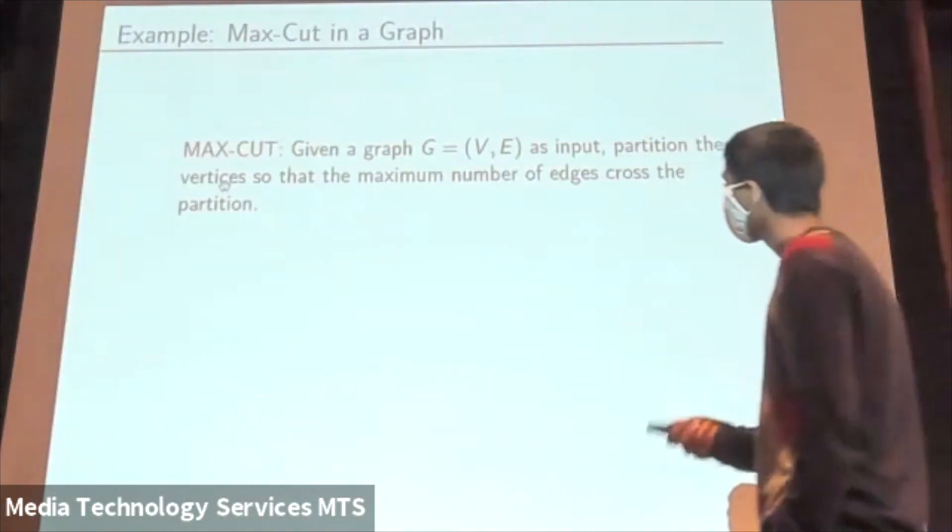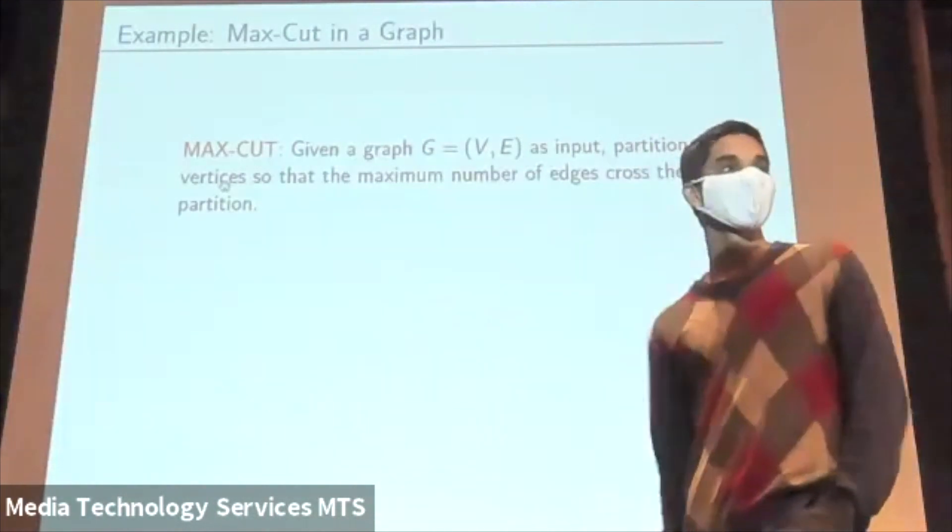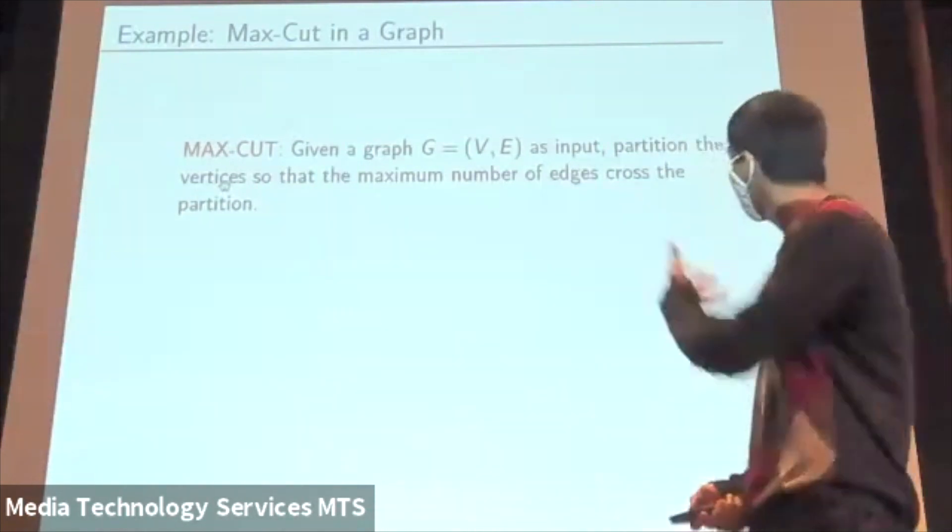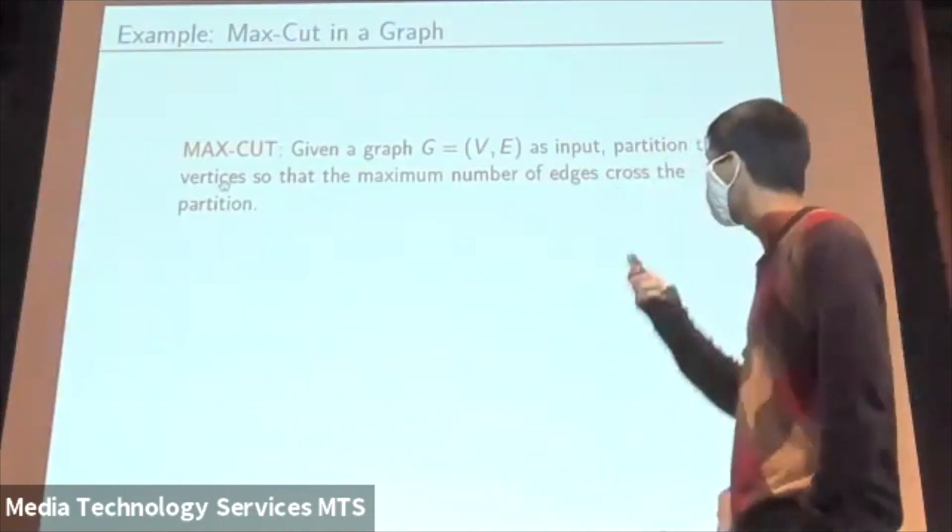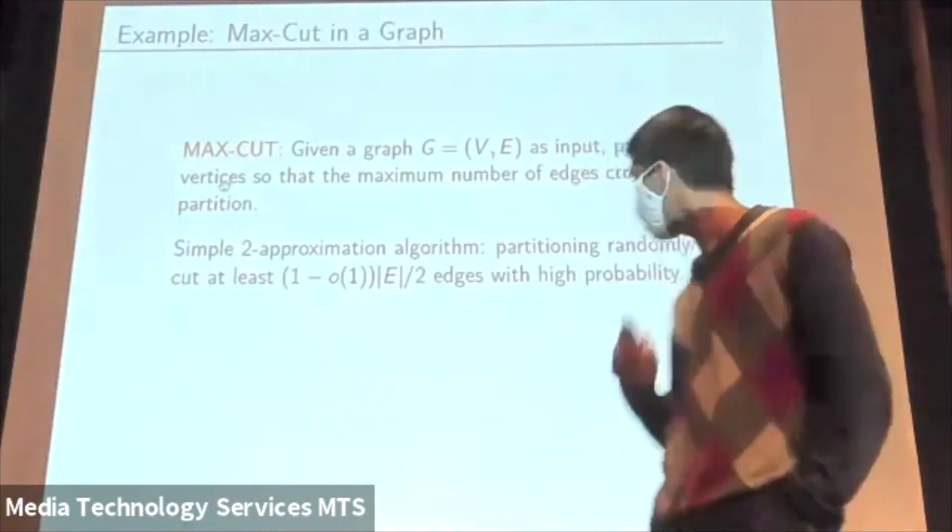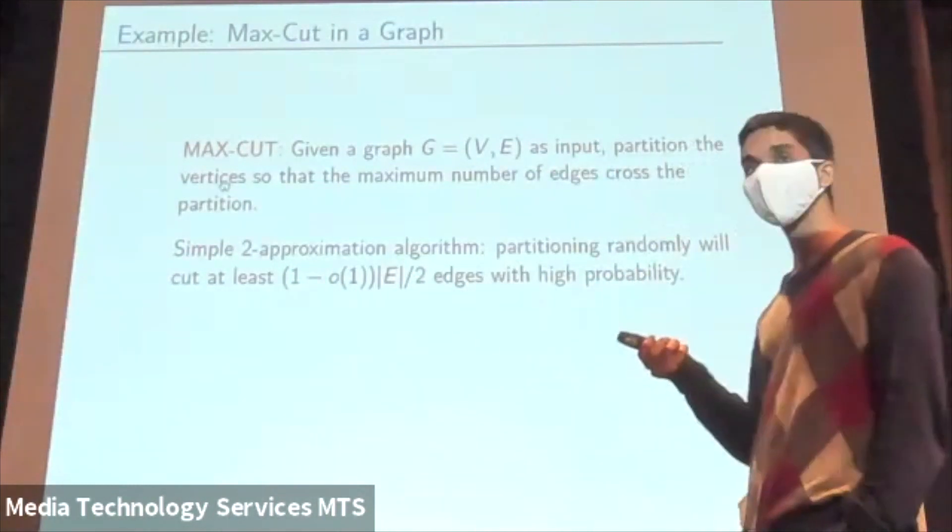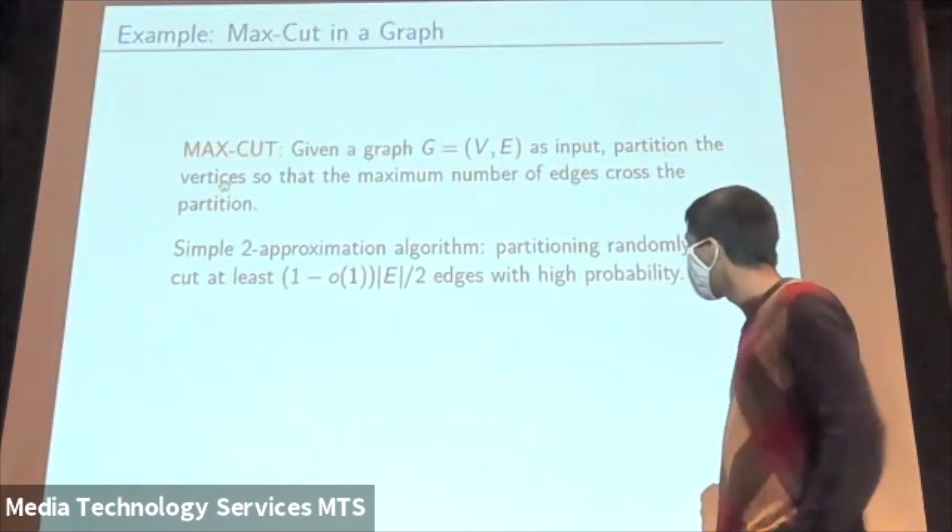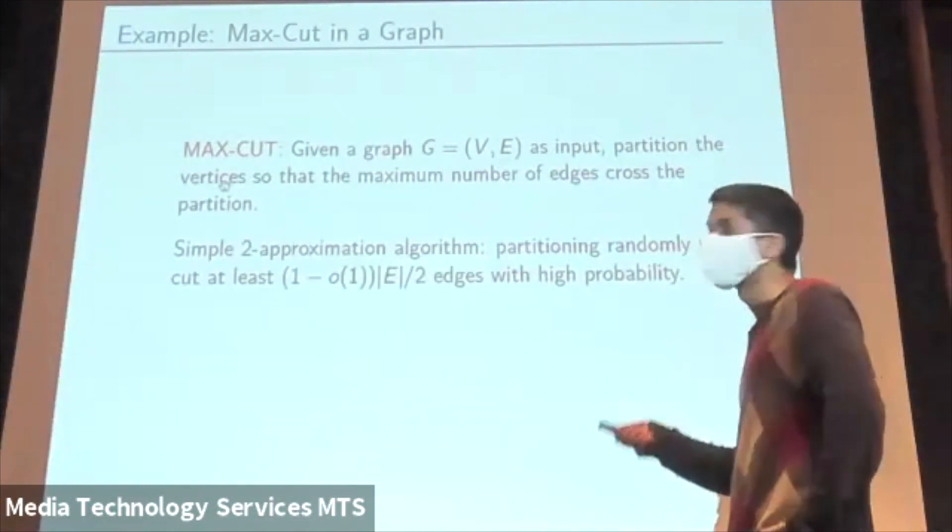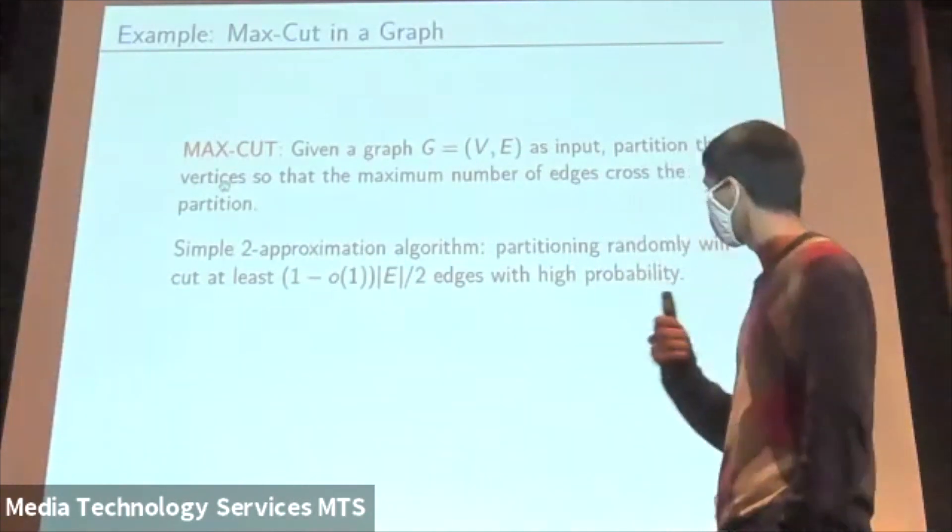Let's look at a concrete example. This is an optimization problem. Given a graph G, I want to find a partition of the vertices that maximizes the number of edges going across the partition. This problem is referred to as the max cut problem. It's very easy to see that there's an easy two approximation algorithm for this problem. If you just take every vertex and randomly assign it to a partition, it's easy to check that with high probability, a half fraction of the edges straddle the partition. Because the cut has size at most the number of edges, this is the two approximation.